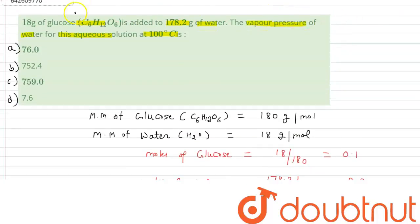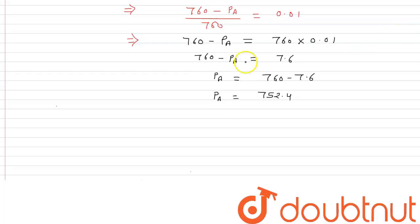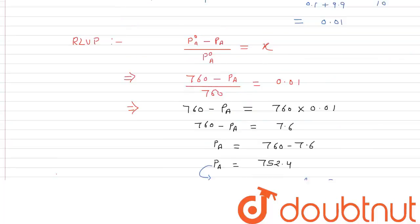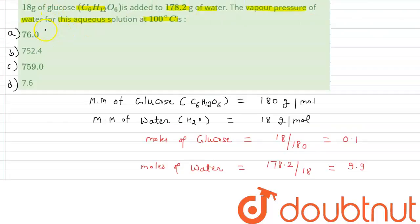So PA, the vapor pressure of water for this aqueous solution, comes out to be 752.4 mmHg. Checking the options: option A is 776 — wrong; option B is 752.4 — correct; option C is 752 — wrong; and 7.6 is also wrong. So we are left only with option B as the correct answer. We can conclude that the vapor pressure of water for this aqueous solution at 100°C is 752.4 mmHg.